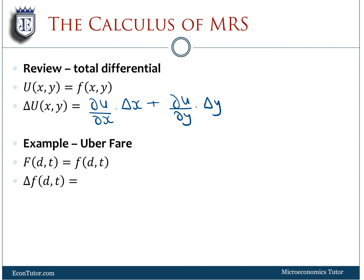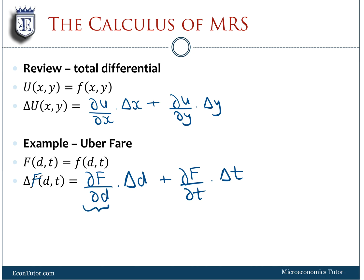Here's an example using an Uber fare to illustrate what a total differential means. An Uber fare is a function of distance and time, so the change in fare depends on the derivative of fare with respect to distance times the change in distance, plus the derivative of fare with respect to time times the change in time. This gives you charges per mile times miles traveled, plus charges per minute times time traveled — the total change in fare for any taxi ride.